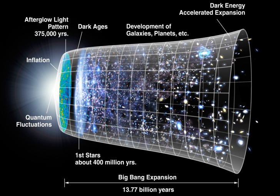Over a long period of time, the slightly denser regions of the nearly uniformly distributed matter gravitationally attracted nearby matter and thus grew even denser, forming gas clouds, stars, galaxies, and the other astronomical structures observable today. The four possible types of matter are known as cold dark matter, warm dark matter, hot dark matter, and baryonic matter. The best measurements available, from the Wilkinson Microwave Anisotropy Probe (WMAP), show that the data is well fit by a λ-CDM model in which dark matter is assumed to be cold. Warm dark matter is ruled out by early reionization, and dark matter is estimated to make up about 23% of the matter-energy of the universe, while baryonic matter makes up about 4.6%.